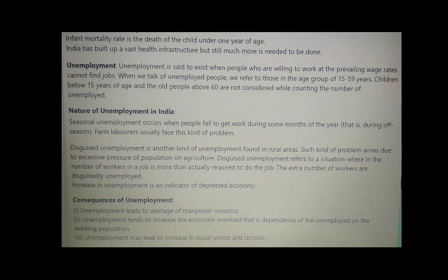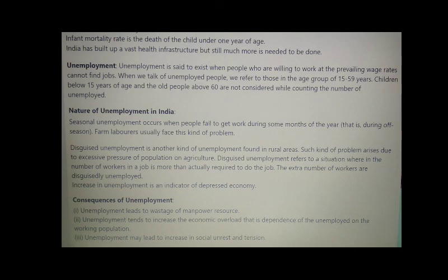Disguised unemployment is another kind of unemployment found in rural areas. It arises due to excessive pressure of population on agriculture. Disguised unemployment refers to a situation where the number of workers in a job is more than actually required. The extra workers are disguisedly unemployed. Increase in unemployment is an indicator of a depressed economy. Consequences of unemployment include wastage of manpower resources, increased economic overload on the working population, and may lead to increased social unrest.